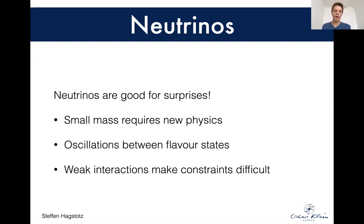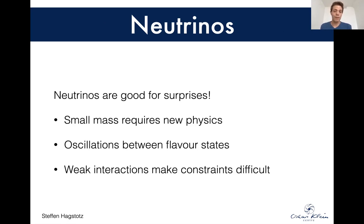Why neutrinos? Well, neutrinos are always good for surprises. Their masses are not explained in the standard model of particle physics, so you need some new ingredient to actually provide this mass term for neutrinos. Additionally, the fact that they have mass also leads to oscillations, which I will talk about in a minute. Generally, neutrinos are only weakly interacting, and that makes measuring their properties very, very challenging. There's always the possibility that there's unknown physics hiding there.